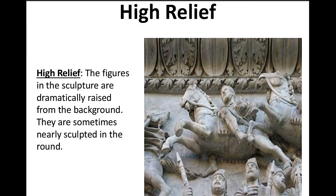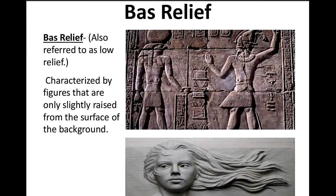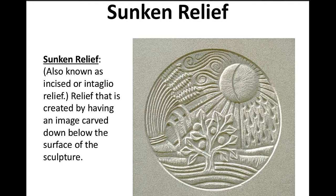Bas relief, also referred to as low relief, is characterized by figures that are only slightly raised from the surface of the background. Sunken relief is somewhat a reverse of the high relief. Also known as incised or intaglio relief, it is relief that is created by having an image carved down below the surface of the sculpture.